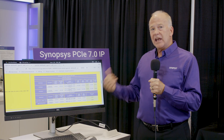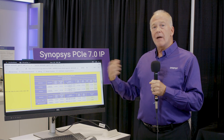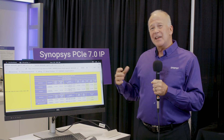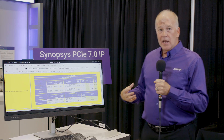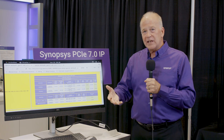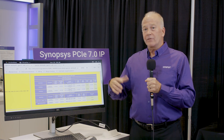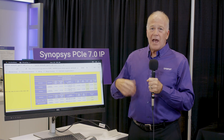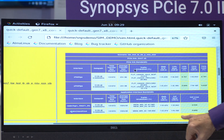So if you think about it, we have 8 lanes times 128 gigatransfers per second and then divide by 8 to get gigabytes per second. In theory, you might think you should have 128 gigabytes per second. But in fact, you've got 236 data bits in a flit out of 256. Then you've got skips and other things like that. So there's overhead and you lose some of that bandwidth.